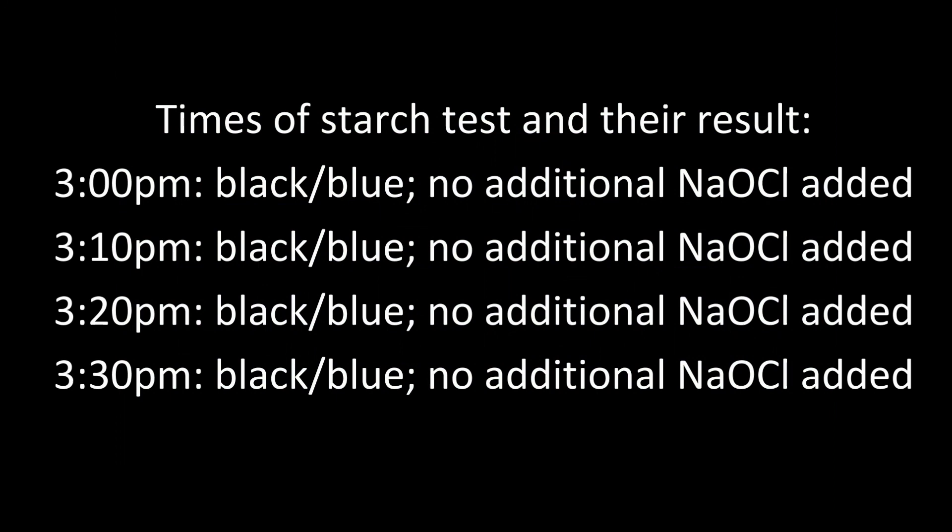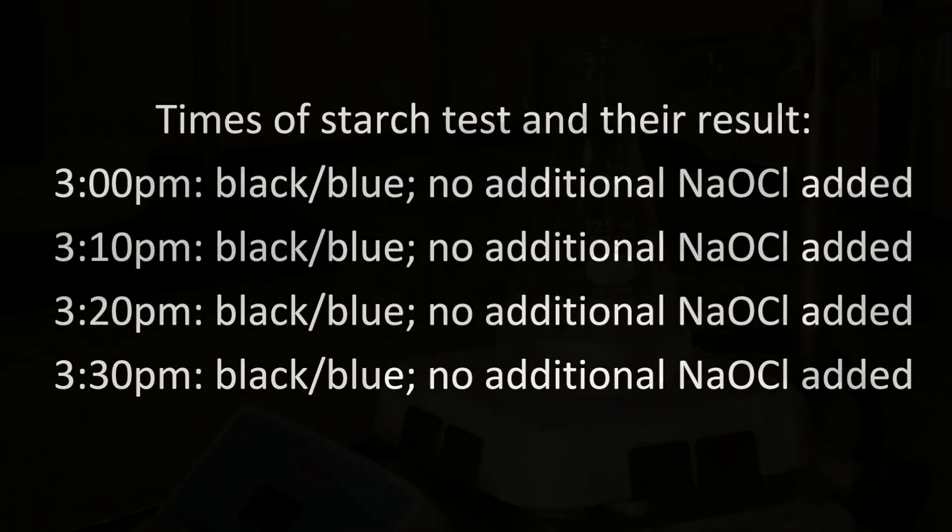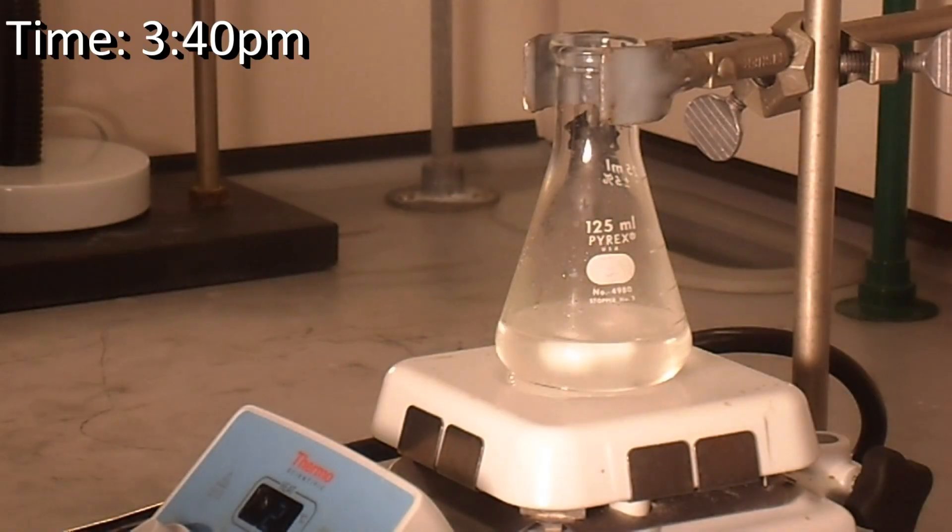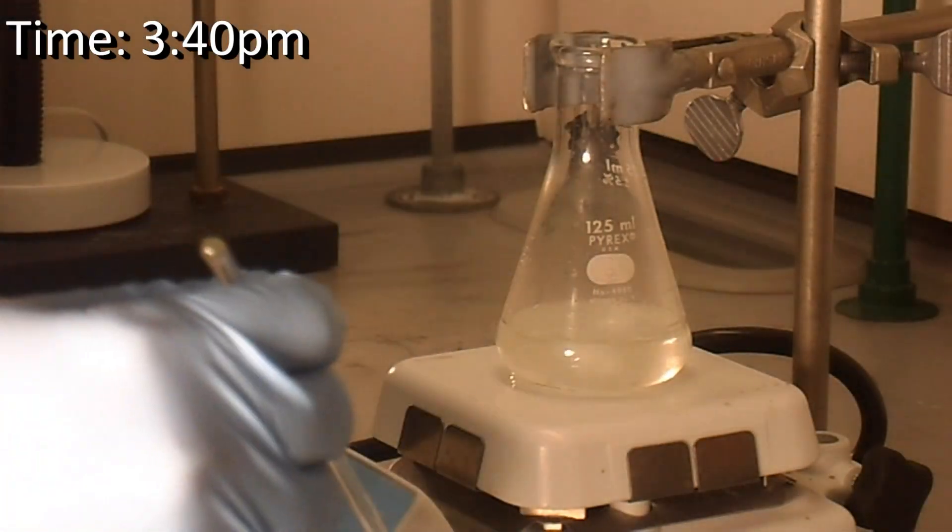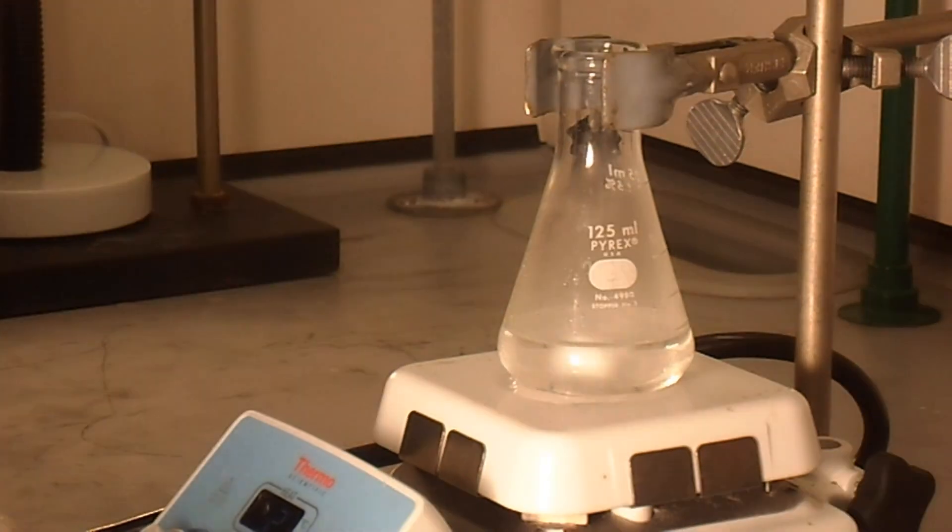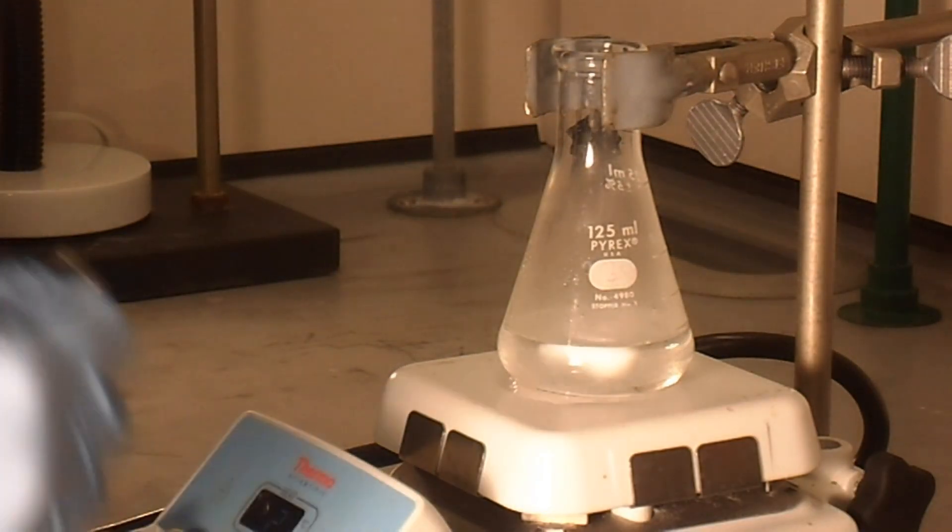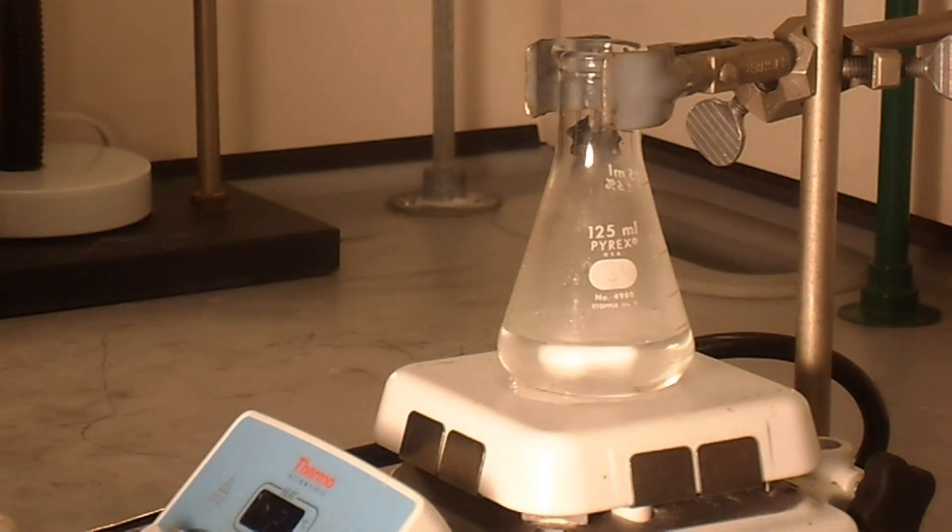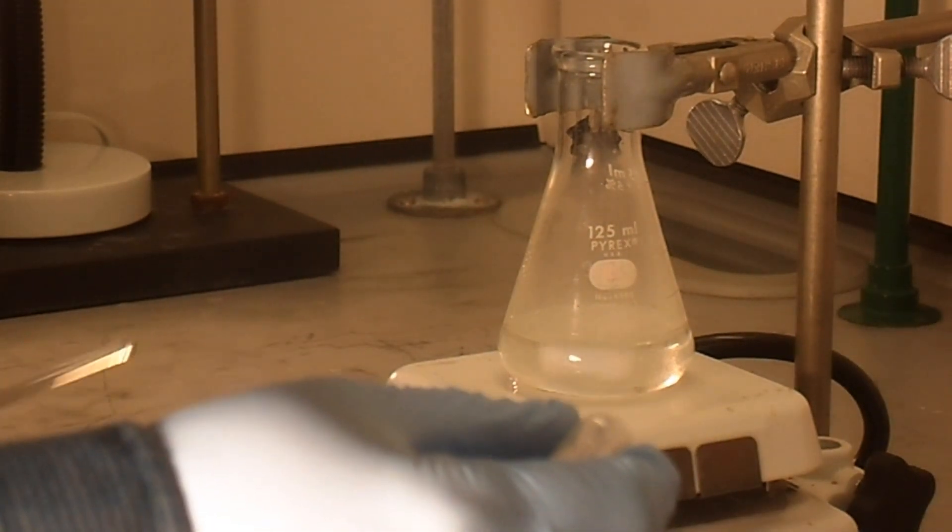One hour later. We are on our final starch test. Our starch test is negative. We want to add one milliliter of sodium bisulfite, one milliliter at a time, until our starch paper no longer turns blue.